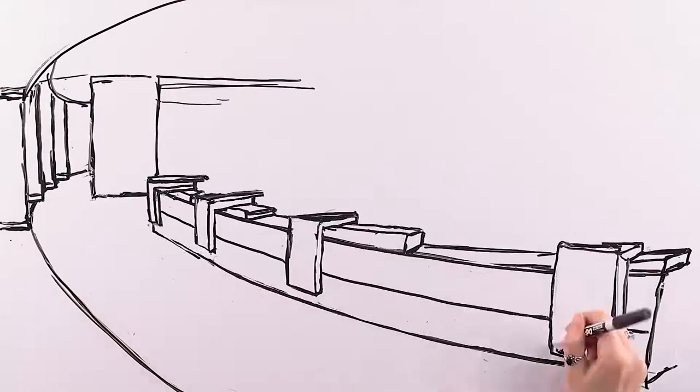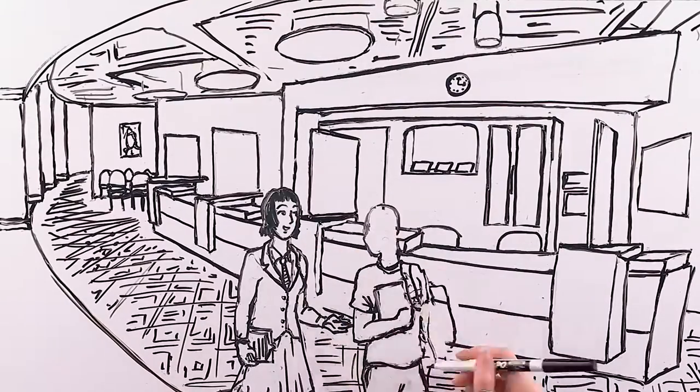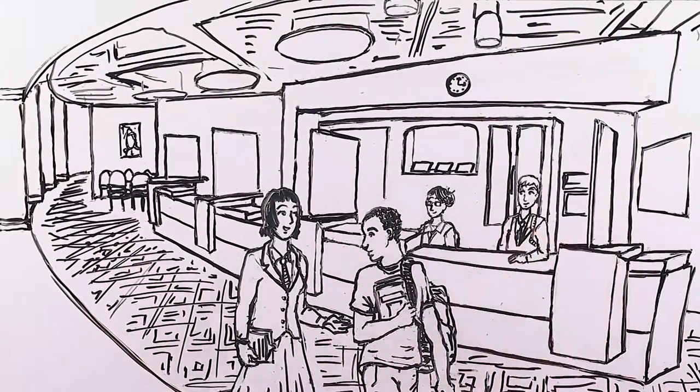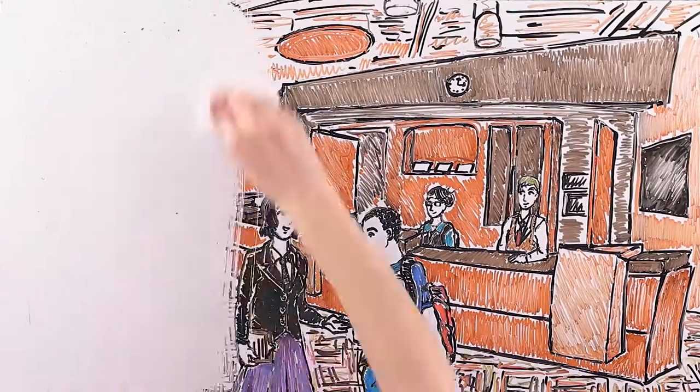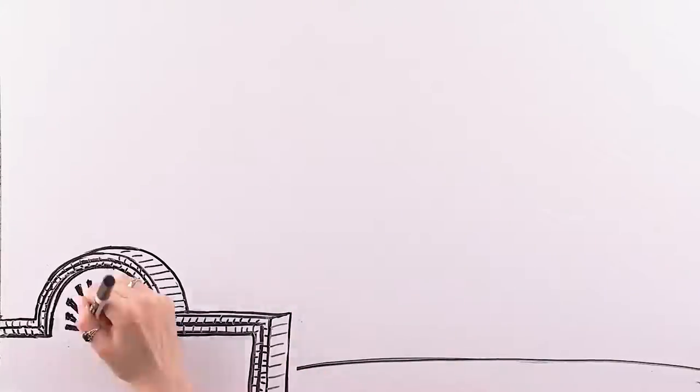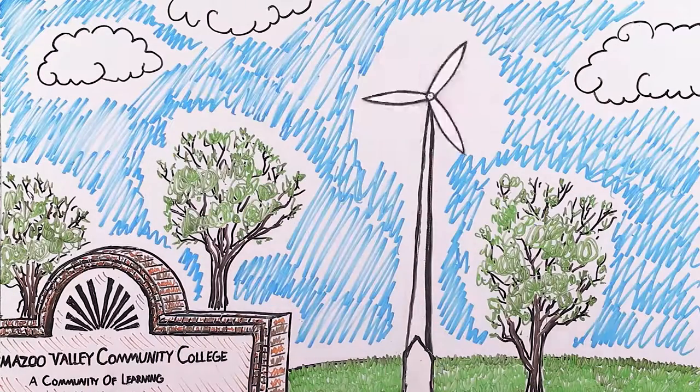Kalamazoo Valley's teaching and learning strategies continue to evolve through the creation of the Student Success Center, providing one-on-one assistance to students and the personal touch they need to be successful. Next, the college became a national player in wind turbine technology and manpower training.